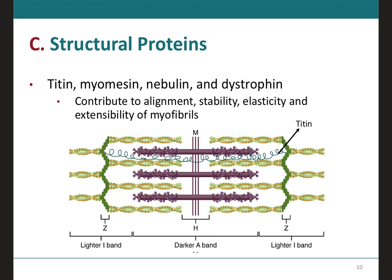Next, we have what we call structural proteins. There are several of them, but the one I really want you to know is titin, which will anchor the thick filament from one Z line to the middle line called the M line. You may have also heard of dystrophin because there's a disease called muscular dystrophy where there's a deficiency of this protein, but we won't get into details about that in this module.